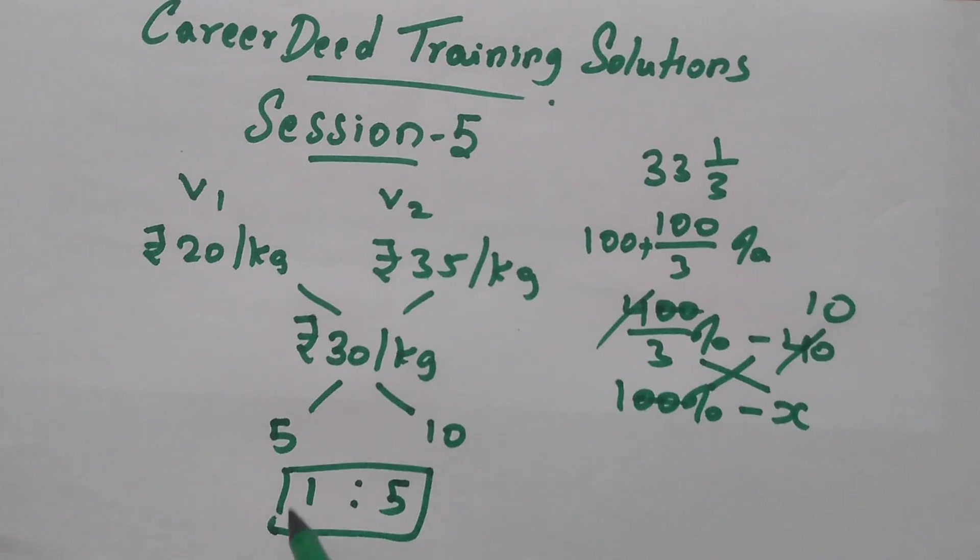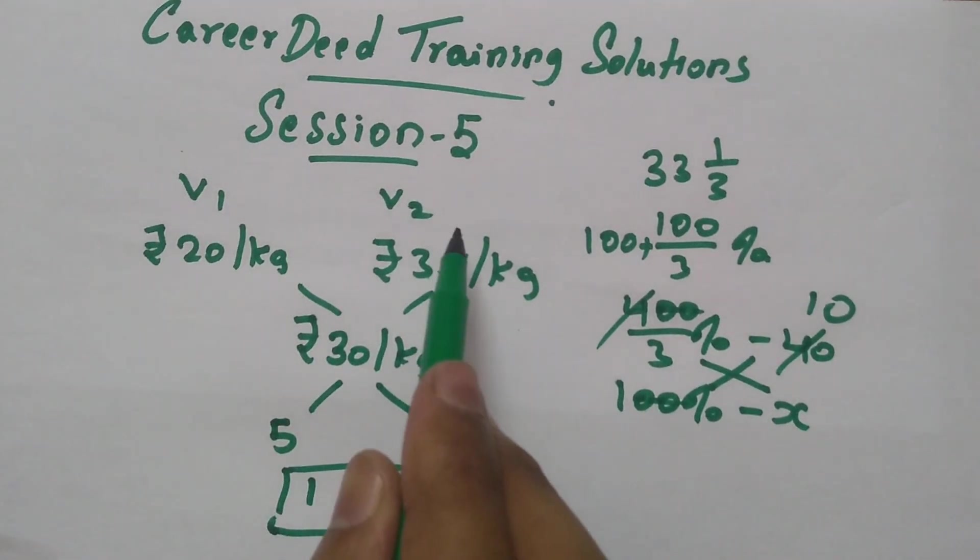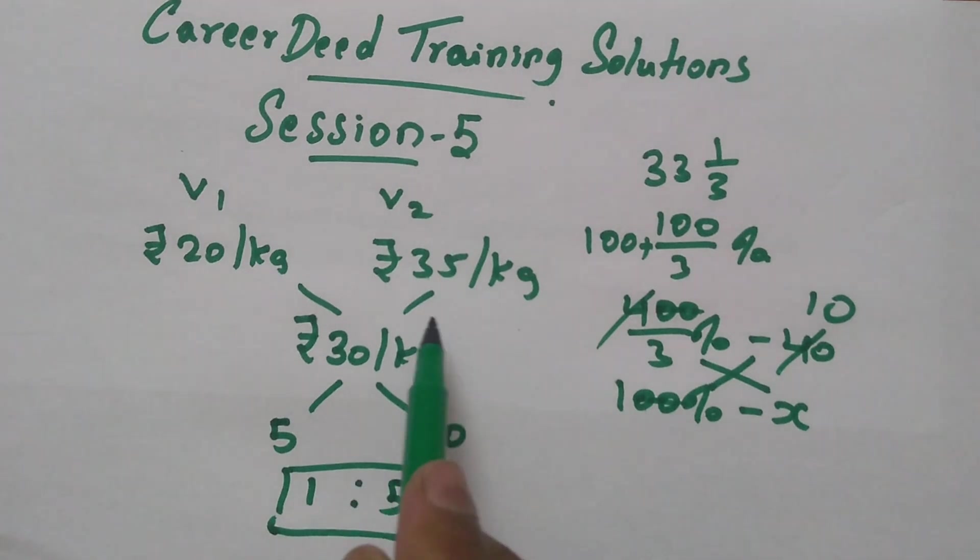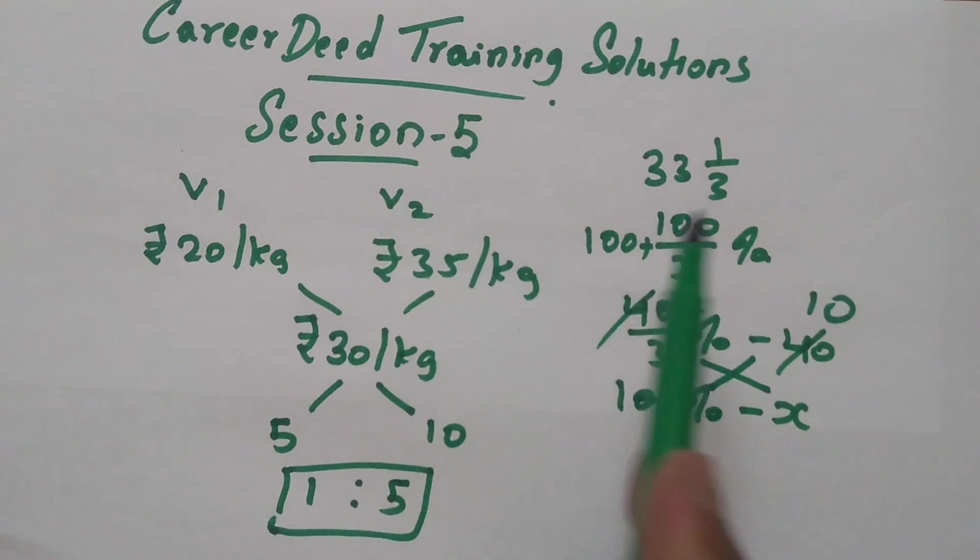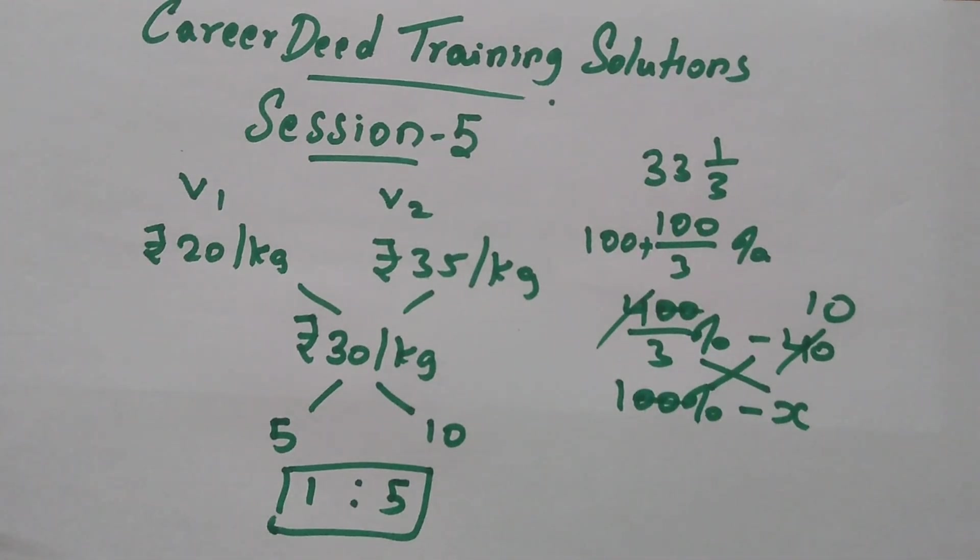So if you take 1 kilogram of variety 1 rice costing 20 per kg and 2 kilograms of variety 2 rice costing 35 per kg and sell for rupees 40 per kg, you will get a 33⅓% profit.